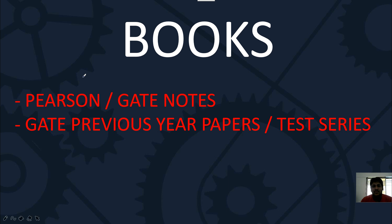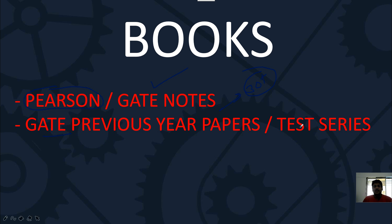Now for books — those preparing for GATE or who gave GATE can use their GATE papers. For newcomers, there is a Pearson book available; the Amazon link is in the description under the Nihilent recruitment folder. It's a green book with theory and MCQs. Also solve GATE previous year papers — past 30 years — for both CS and IT. Alternatively, you can directly join our test series where I include important GATE questions. I will announce the test series soon, likely starting Sunday, as there are now three branches.